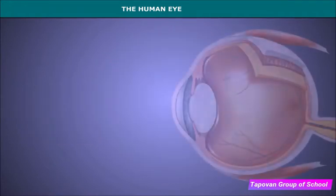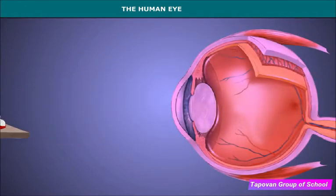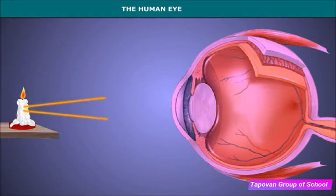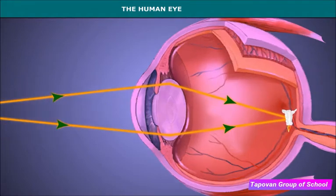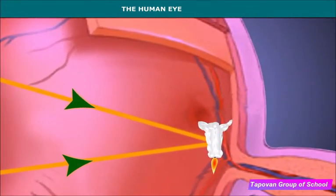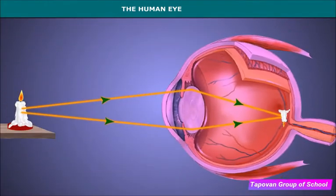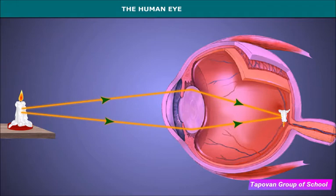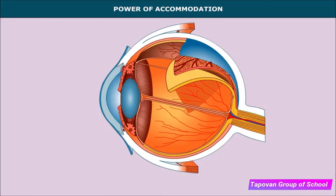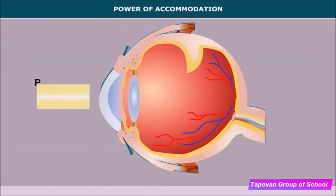The light rays entering the eye are focused on the retina by the lens. A real and inverted image of the object is formed on the retina. The retina consists of light-sensitive receptors known as rods and cones. These photoreceptors convert light energy into electrical energy. These electrical signals reach the brain via the optic nerves, and the brain interprets them to produce the sensation of vision.